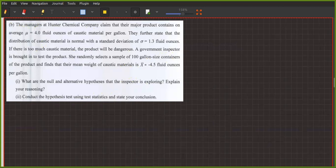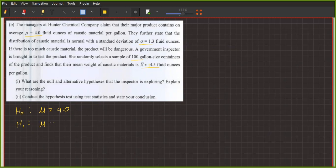The managers at Hunter Chemical Company claim that the major product contains on average μ equals 4.0 ounces of caustic material per gallon. They further state that the distribution of caustic material is normal with standard deviation of σ equals 1.3. Once again, we have equality at the beginning, μ equals 4.0.